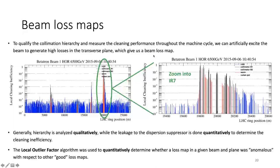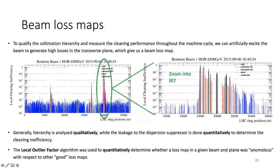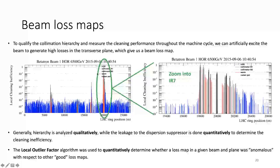The beam loss map is a snapshot in time of the distribution of losses around the ring. Each bar represents a BLM recording. Blue bars are BLMs in cold regions, black and gray are collimators, red are BLMs in warm insertions, and green are special insertable devices known as Roman pots.